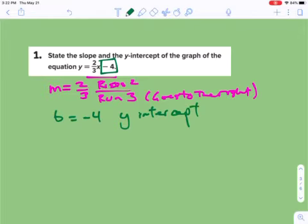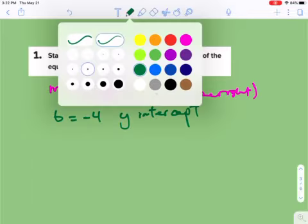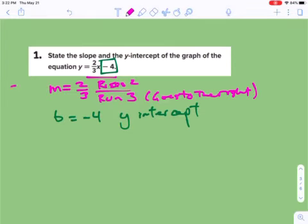So as long as you understand what these are, you're good writing m and b. Otherwise, if you want to physically write slope, maybe I'll do that over here next to this one right here. Here's slope.